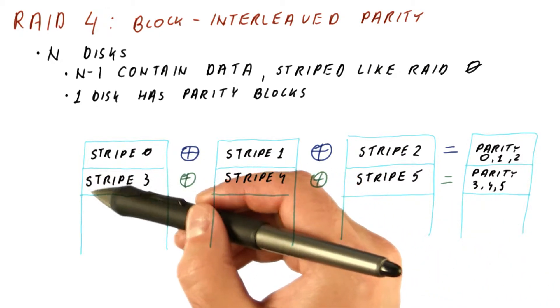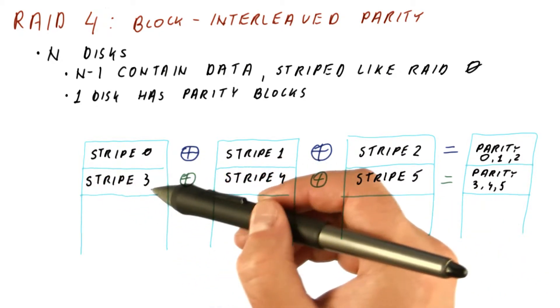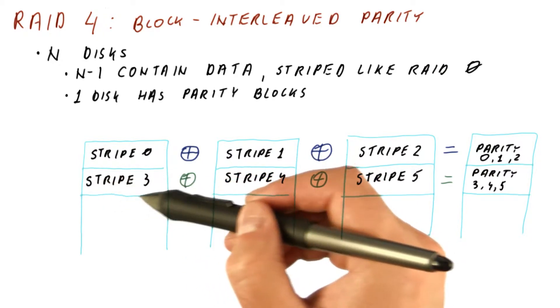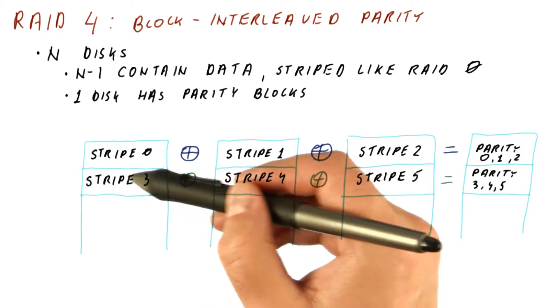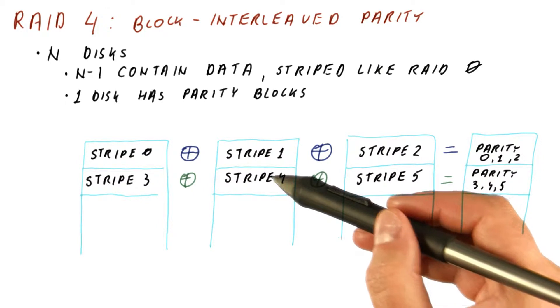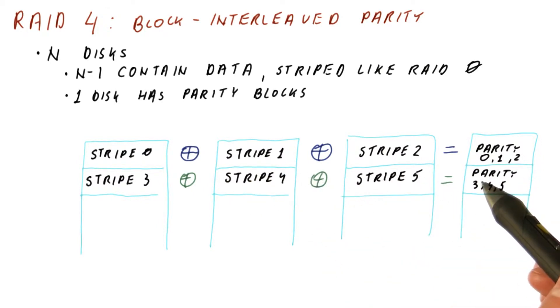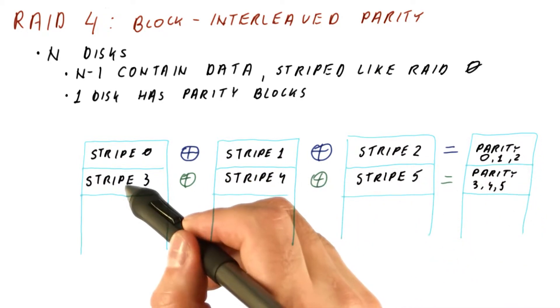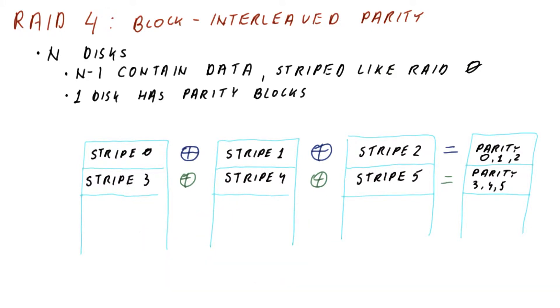Or if there is an error in just, for example, this one stripe gets too damaged to reconstruct by using the error correction code of this disk. In that case, again, we can read this stripe, this stripe, and the parity. And then reconstruct what should have been the bits of this.